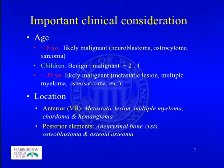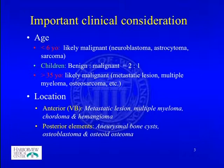When dealing with primary bone tumors, important clinical considerations include the age and location of the tumor. For age: if less than 6 years old, the tumor is likely malignant; during childhood, it is likely benign; and over 35 years old, malignant primary tumors are the main consideration. For location, in the vertebral body, you're most likely looking at a metastatic lesion, multiple myeloma, chordoma, or hemangioma.